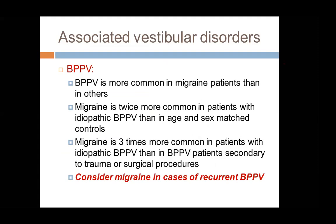There is an association between vestibular migraine and some vestibular disorders. Probably the most common vestibular disorders associated with vestibular migraine are benign paroxysmal positional vertigo (BPPV) and Meniere disease. BPPV is more common in migraine patients, and migraine is three times more common in patients with idiopathic BPPV than in BPPV secondary to trauma or surgical procedures. One of the important and common risk factors of recurrent BPPV is migraine or vestibular migraine.